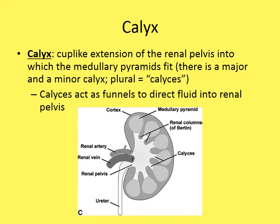The calyx — plural calyces — is a cup-like extension of the renal pelvis into the medullary pyramids. There are major and minor calyces. They extend from the renal pelvis up into the pyramids and act as funnels to direct fluid down into the renal pelvis, which then flows down the ureter and into the bladder.